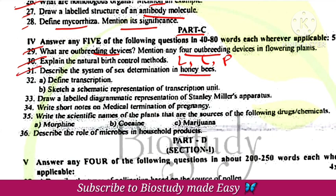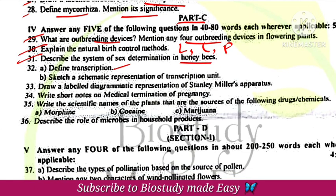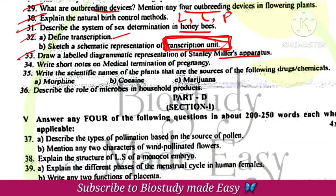Describe sex determination in honeybees — easy, haplodiploidy life cycle. Transcription: give the definition and draw a diagram of the transcription unit. Next, draw a diagram of Miller's apparatus, just a diagram for three marks.